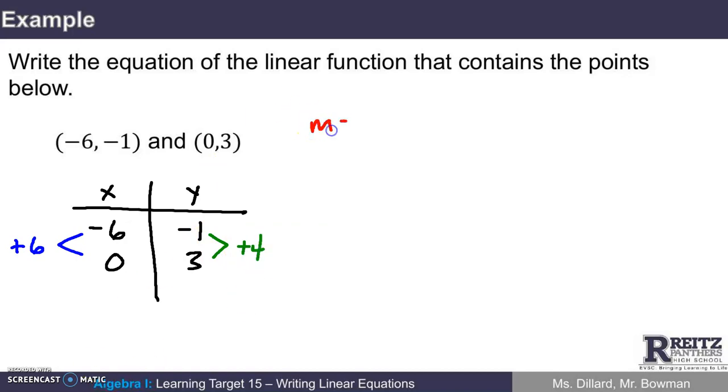And the slope is change in y over change in x. I've got two positive things, which makes the slope positive. I can reduce this fraction 4 sixths, because 2 divides into both. Let's write that as 2 thirds.